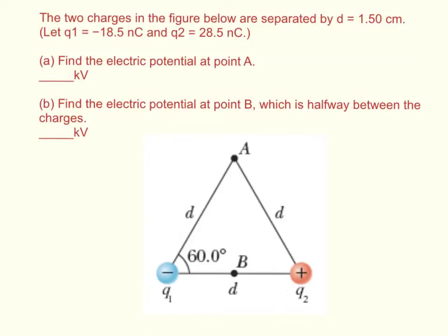The question says the two charges in the figure below are separated by a distance equal to 1.5 centimeters. Let Q1 be negative 18.5 nanocoulombs and Q2 be 28.5 nanocoulombs. Then find the electric potential at point A in kilovolts, and find the electric potential at point B, which is halfway between the charges.